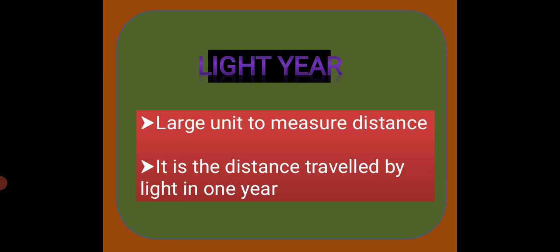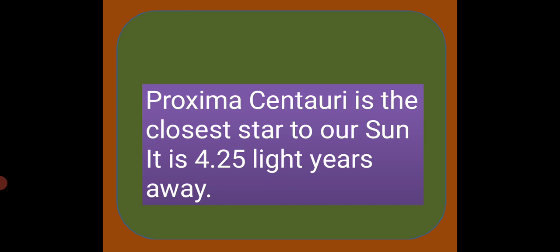The stars are very far away from us. The units like kilometer are not sufficient enough to measure the distance between the earth and the stars. So, a unit called light year is used to measure such large distances. Light year means the distance travelled by light in one year. Proxima Centauri is the closest star to our sun, which is about 4.25 light years away. One light year is around 9.46 into 10 raised to 12 kilometers.